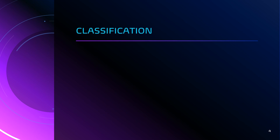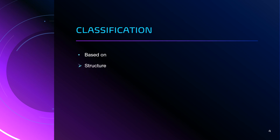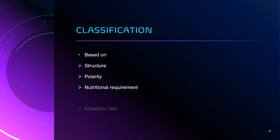Let us go through the classification of standard amino acids. The classification is mainly based on structure, polarity, nutritional requirement, and metabolic fate of amino acids.